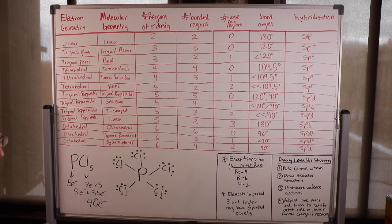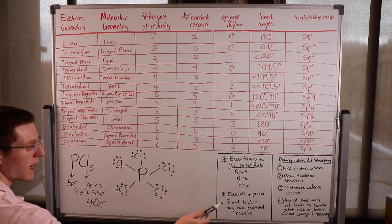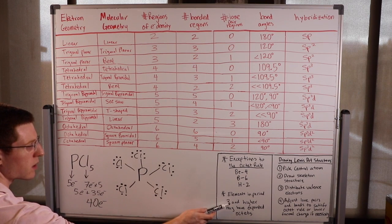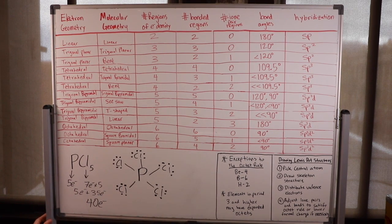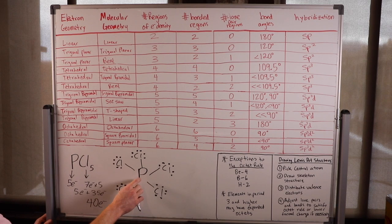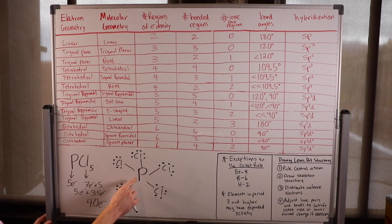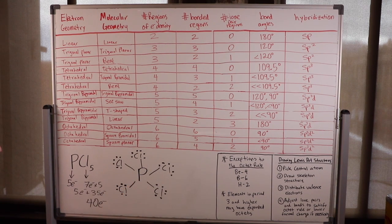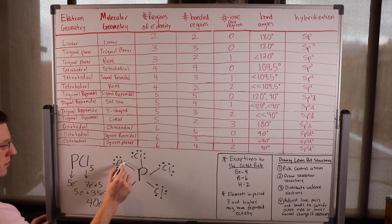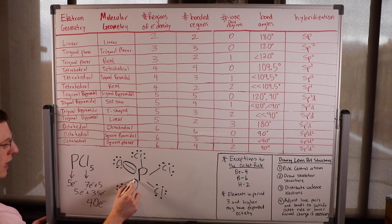There's another exception to the octet rule: elements in period 3 and higher can have expanded octets. Phosphorus is in period 3 — remember the periods are the rows of the periodic table — so it can have an expanded octet. We have a completed Lewis dot structure.